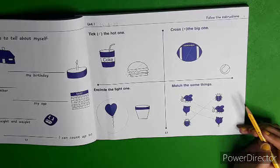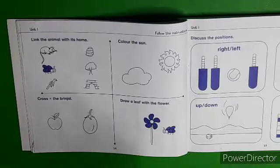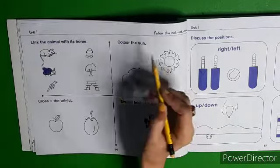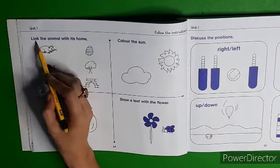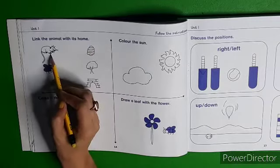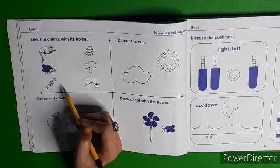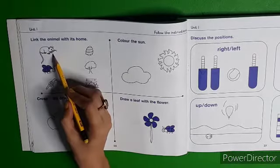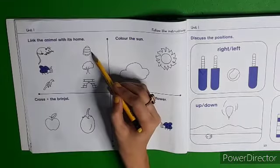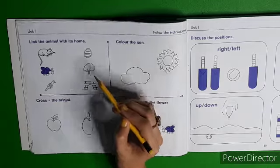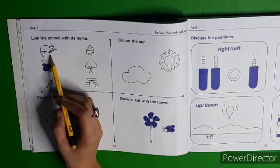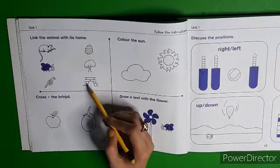Now come to page number 14. Dear children, on this page also first write the date, then follow the instructions. Link the animal with its home — आपने जानवरों को उनके घरों के साथ मिलाना है. We have Rat, Bee, Parrot, Hive, Tree, and Hole. Rat कहाँ रहता है? Rat Hole में रहता है.